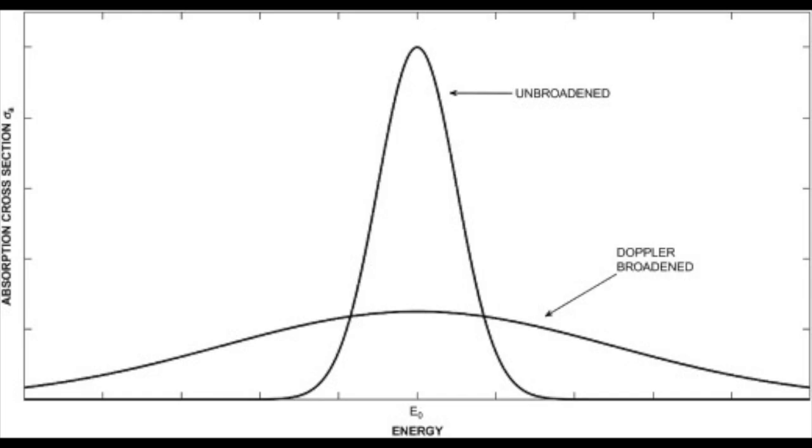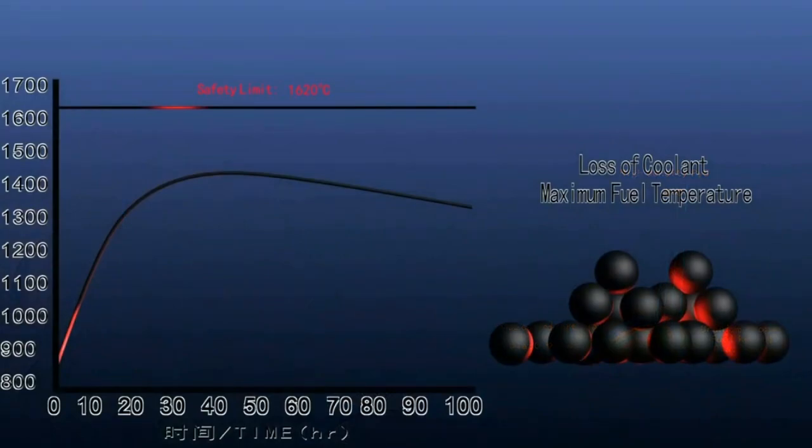This creates a negative feedback loop, meaning that the reaction is self-regulating and can be throttled by simply varying the flow of coolant through the core. If coolant flow stops,